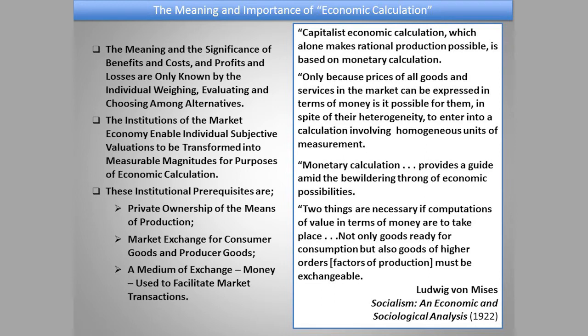And finally, there must be a medium of exchange — a money that can serve as the common denominator through which all things in the marketplace can be expressed in terms of a common unit for comparison, evaluation, judgment, and decision. As Mises himself said in his famous book on socialism: capitalist economic calculation, which alone makes rational production possible, is based on monetary calculation. Monetary calculation provides a guide amid the bewildering throng of economic possibilities and gives direction and purpose and orientation to everything that people do.